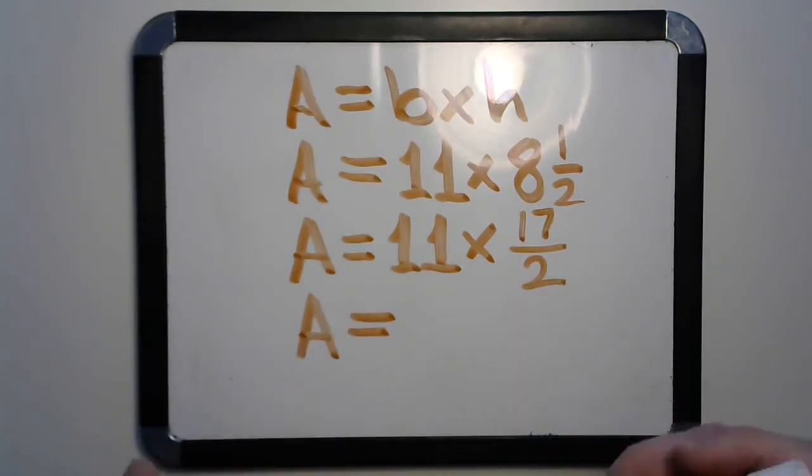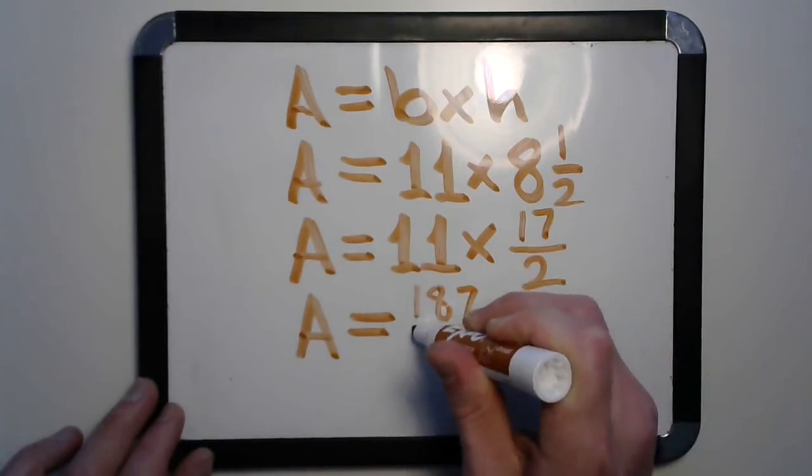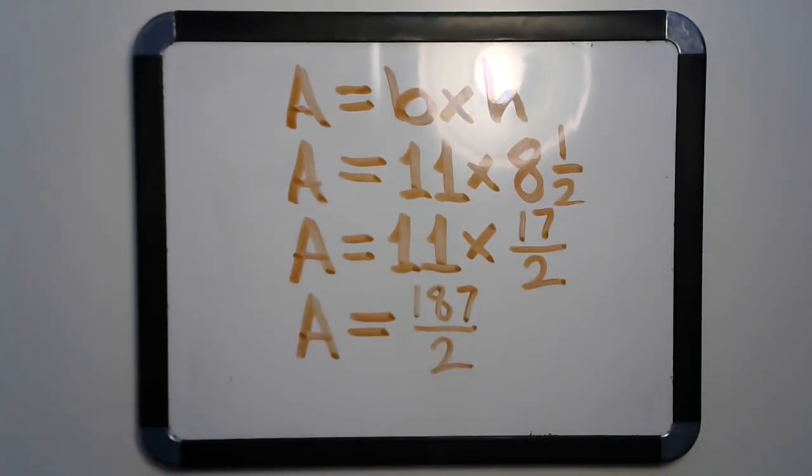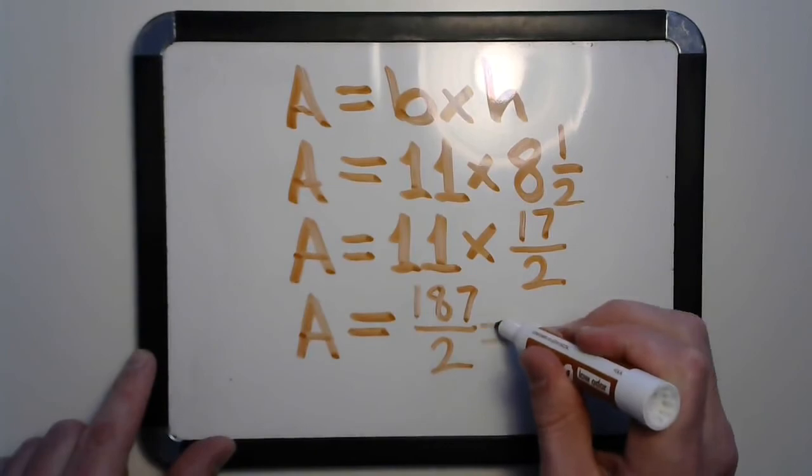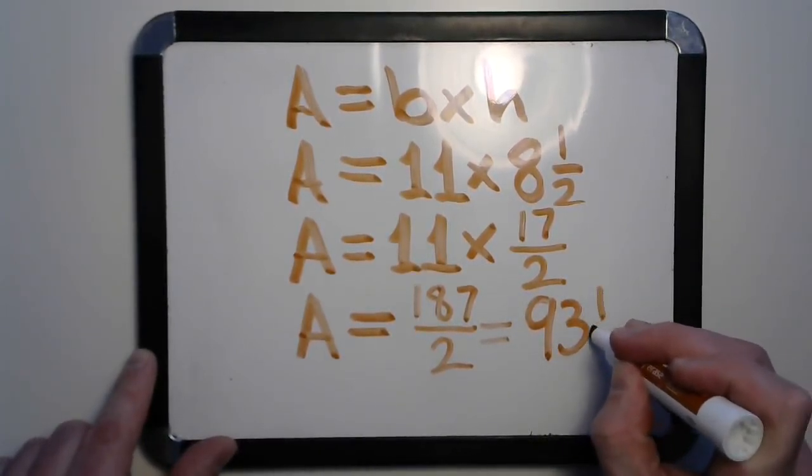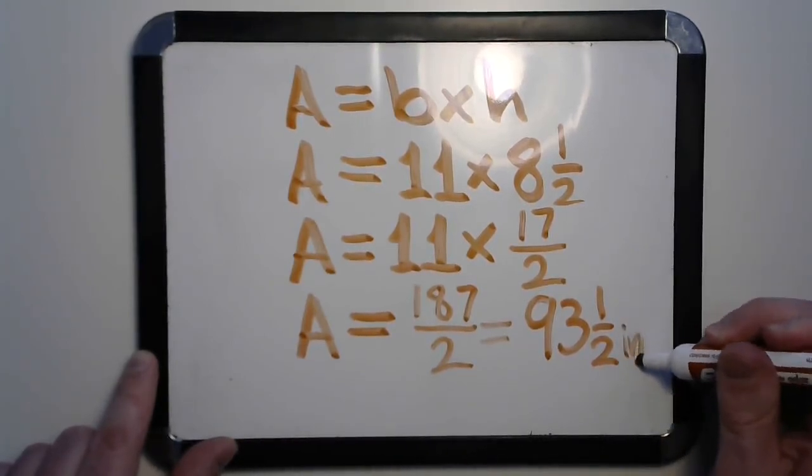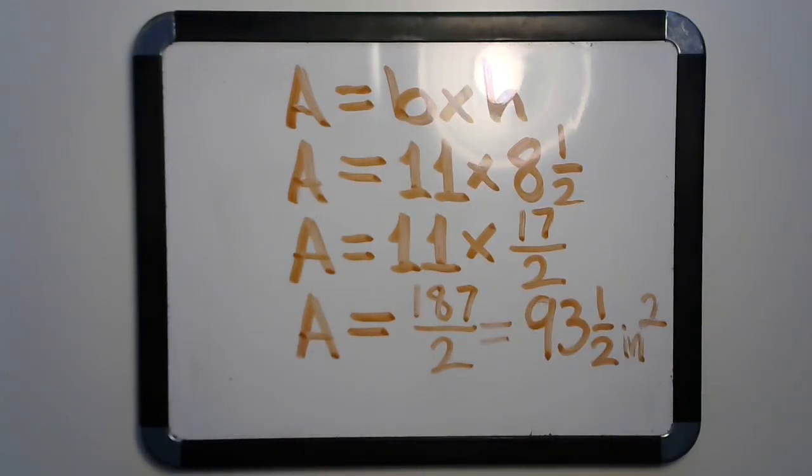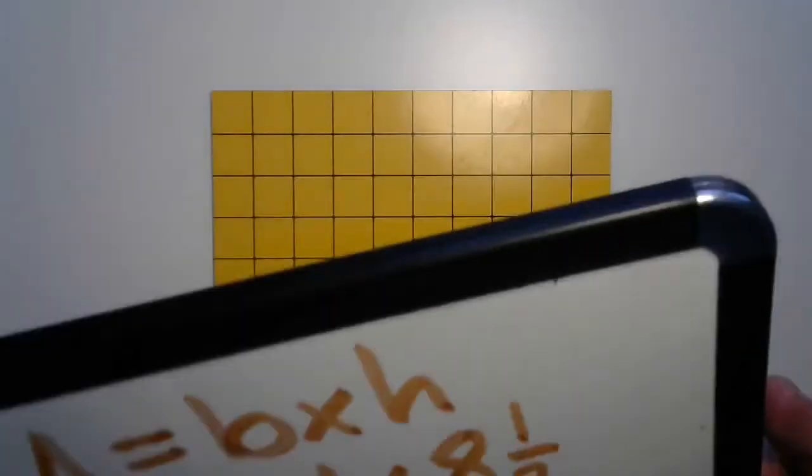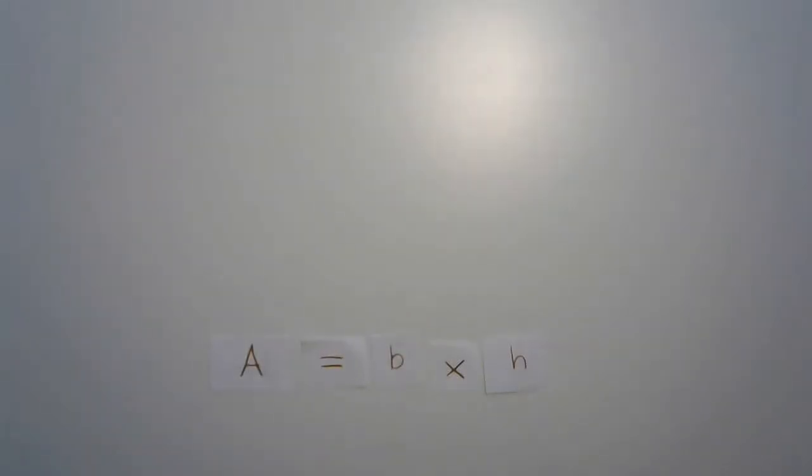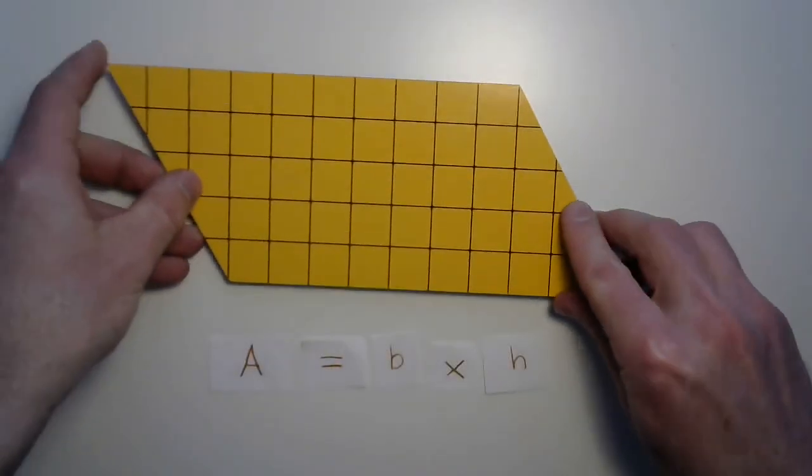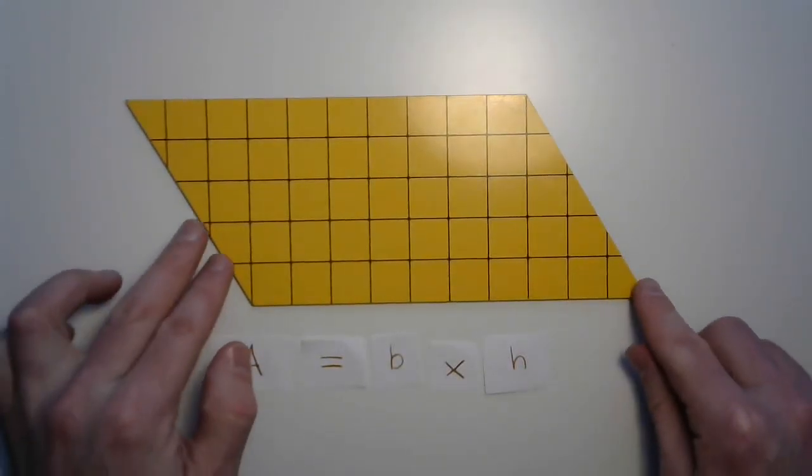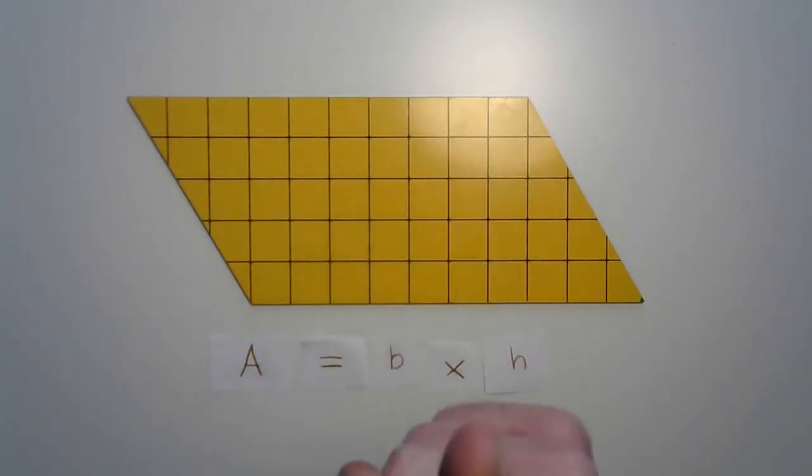Did you get it yet? 187 halves. I wonder if that could be turned into a mixed fraction as well. 93 and one half inches squared. Oh, that was pretty ridiculous with that fraction there. Watch out for those partial inches, centimeters, feet, miles, or whatever else you might do. Rectangles are pretty cool, but what would you do if I gave you one of these - the parallelogram? You'll have to come to that lesson to find that out. I'll see you there.